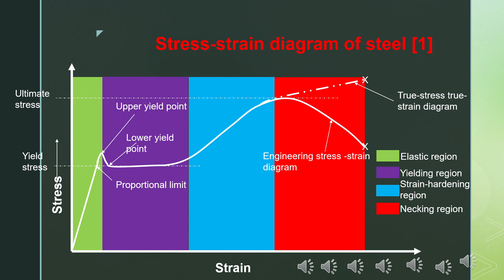Next comes the strain hardening region. In this region, the slope of the stress-strain curve — that is, the tangent modulus — goes on increasing until it reaches the necking region.